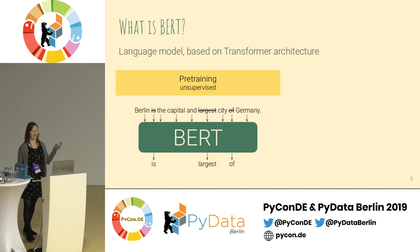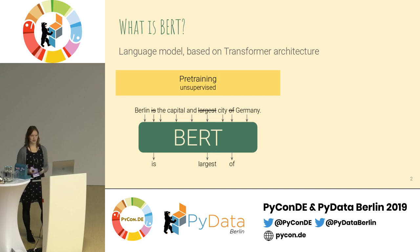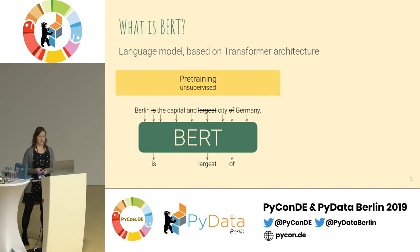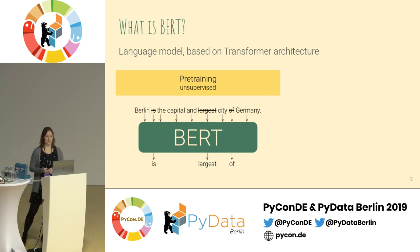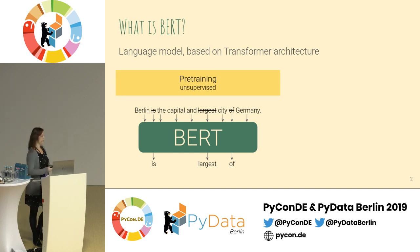BERT is a language model that got published around a year ago. The goal of BERT in the first phase, which I will call pre-training here, is to learn as much about language in general as possible. We take an input sentence like the one you can see here — 'Berlin is the capital and largest city of Germany' — and we feed it to the model, but we randomly mask some of the input words.